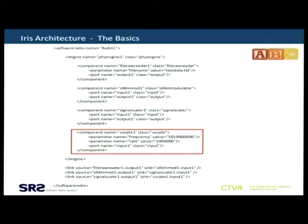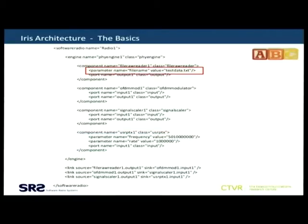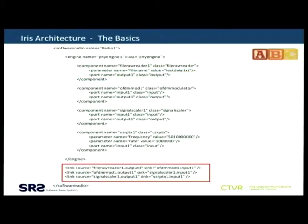Each of these components can expose parameters which you can set and change at runtime. If you run an XML file like this without specifying parameters, it will just use default values. You use the parameter tag to identify parameters and set the value. You define ports — inputs and outputs — and then define links to link them together. That's how you create your flow graph and get it running.